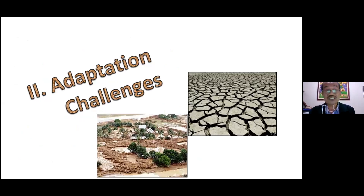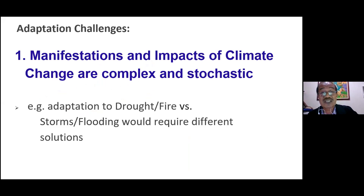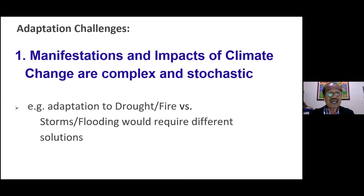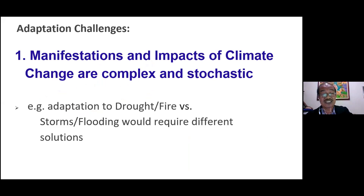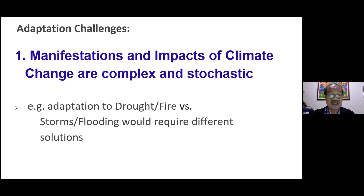The first challenge I have identified is that the manifestations and impacts of climate change are complex and stochastic — meaning unpredictable, occurring by chance. We cannot tell when they come, and therefore any adaptation is difficult to put in place. Even climate patterns are changing now, which is why it is called climate change. The adaptation to drought or forest fires is different from adaptation to storms or flooding, and therefore communities are challenged on what kind of adaptation they should put in place.